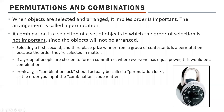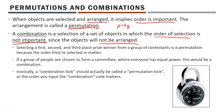Permutations and combinations: when objects are selected and arranged, it implies order is important. That arrangement is called a permutation — permutation is where you're picky and order matters. A combination is a selection of a set of objects in which the order of selection is not important, since the objects will not be arranged.